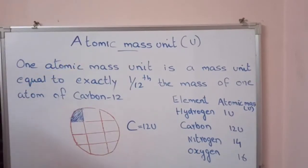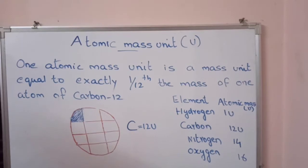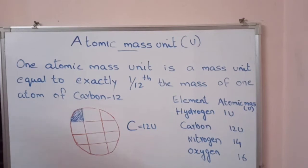Atomic Mass Unit is written as U. In our previous class we had learned Dalton's Atomic Theory. According to Dalton, each element had a characteristic atomic mass. Dalton's Atomic Theory could explain the law of constant proportions so well that scientists were prompted to measure the atomic mass of an atom. Since determining the mass of an individual atom was a relatively difficult task, relative atomic masses were determined using the laws of chemical combinations.